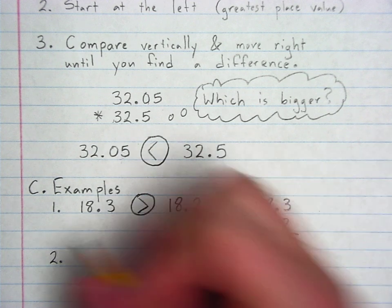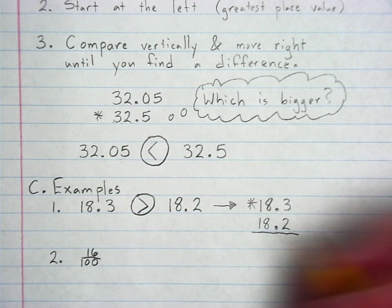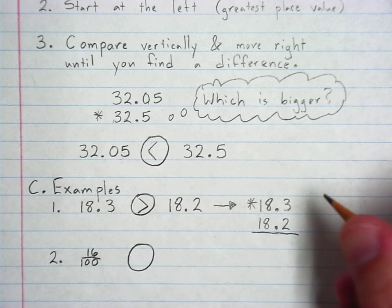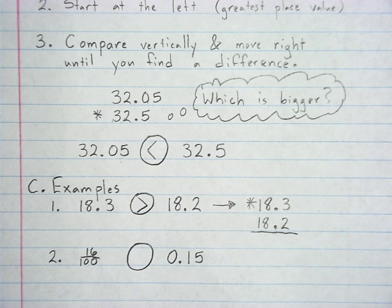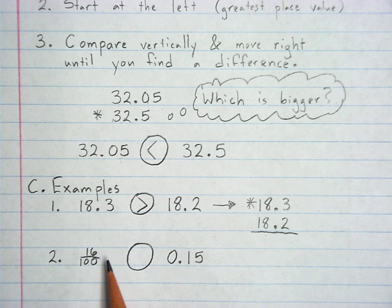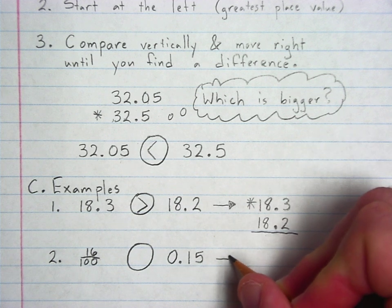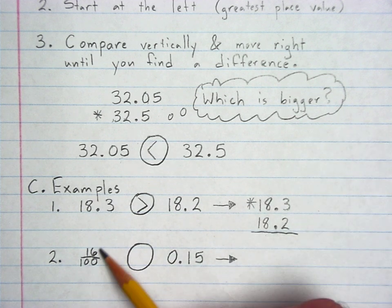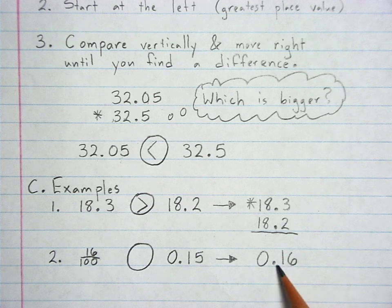But I promise you I can make it worse. 16/100. Oh no, there's a fraction. Compared to 0.15. Okay, now that may look frustrating, but it doesn't have to be. Think about how you would read this. You should read this as sixteen hundredths. If I write that as a decimal, sixteen hundredths, it should look like this. 0.16. Last digit in the hundredths column.